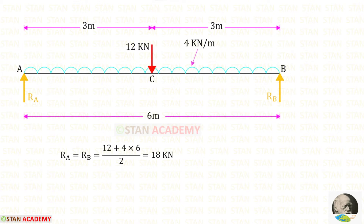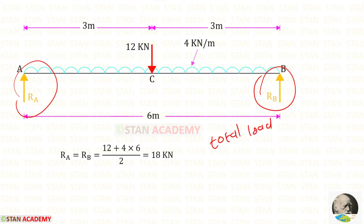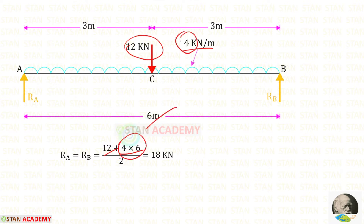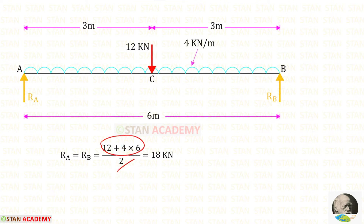In this simply supported beam, let us find the vertical reactions RA and RB. Since the loading is symmetrical, we find the total load and divide by 2. The point load is 12 kN and the UDL contributes 4 × 6 = 24 kN, giving RA and RB each equal to 18 kilonewton.